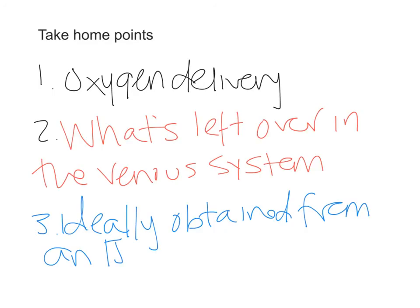Before we conclude, here are three take-home points about mixed venous sats. First, a mixed venous sat is used to determine oxygen delivery — it is what is left over in the venous system after all the blood has gone through and delivered oxygen to the tissues. Second, it is ideally obtained from the pulmonary artery, but when no pulmonary artery catheter is in place, it can be obtained from an IJ catheter sitting in the right atrium. Thank you for your time.